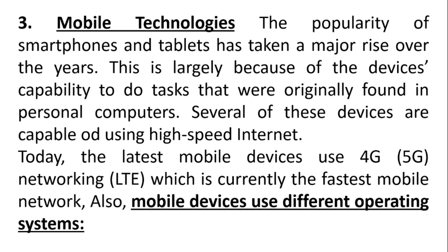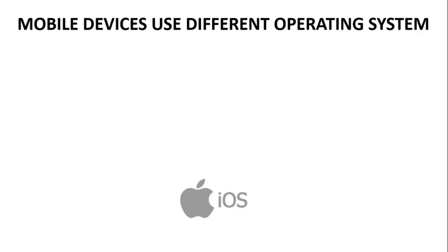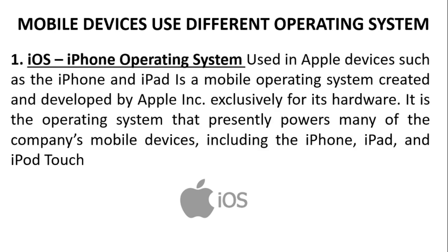Mobile devices use different operating systems. 1. iOS — the iPhone Operating System, used in Apple devices such as the iPhone and iPad, is a mobile operating system created and developed by Apple Inc. exclusively for its hardware. It is the operating system that presently powers many of the company's mobile devices, including the iPhone, iPad, and iPod Touch.